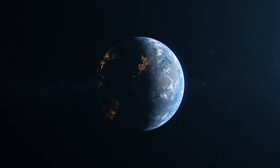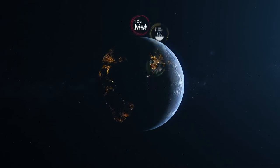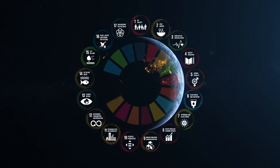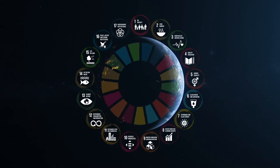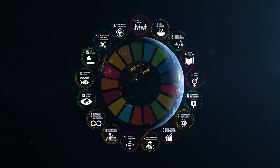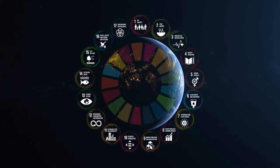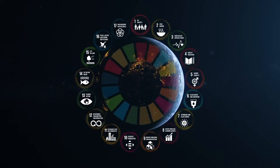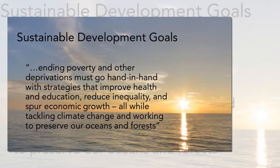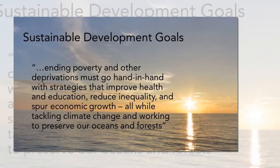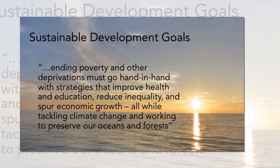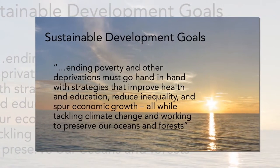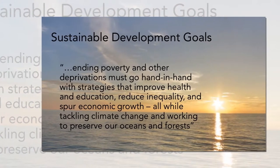These discussions evolved into the current Sustainable Development Goals. In 2015, the United Nations member states — the rich, the poor, east, west, north, south — all adopted the 2030 Agenda for Sustainable Development. This document acknowledged that ending poverty and other deprivations must go hand in hand with strategies that improve health and education, reduce inequality, and spur economic growth, all while tackling climate change and working to preserve our oceans and forests.